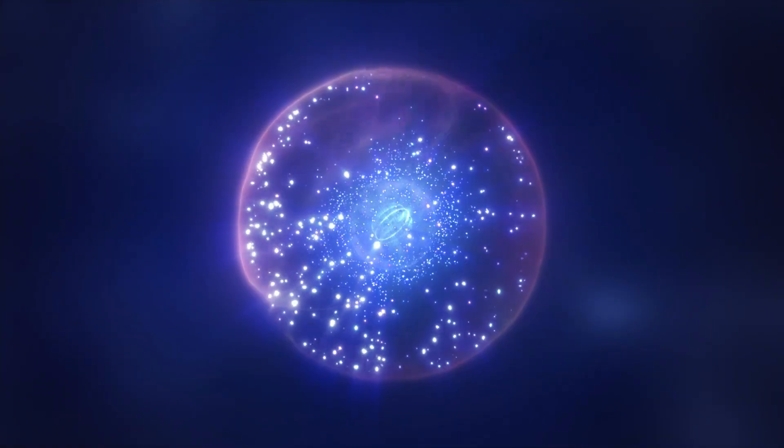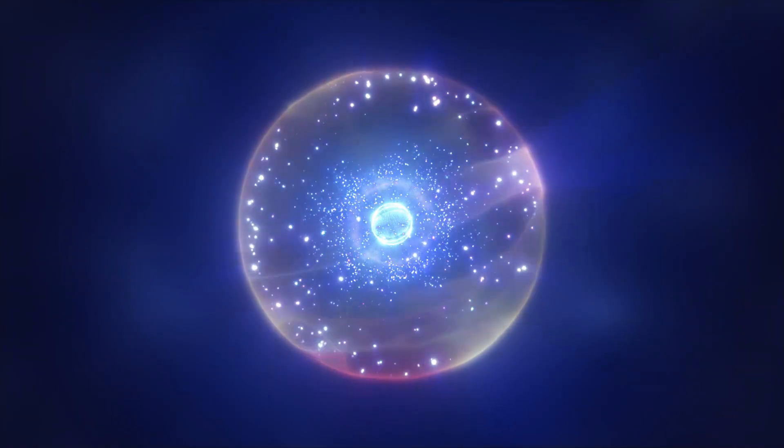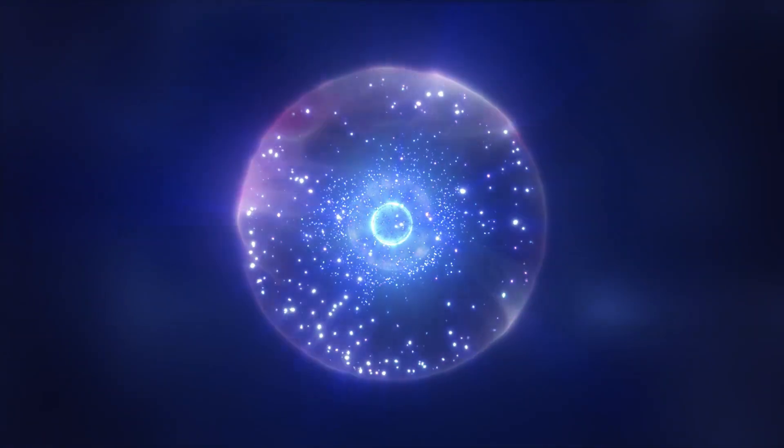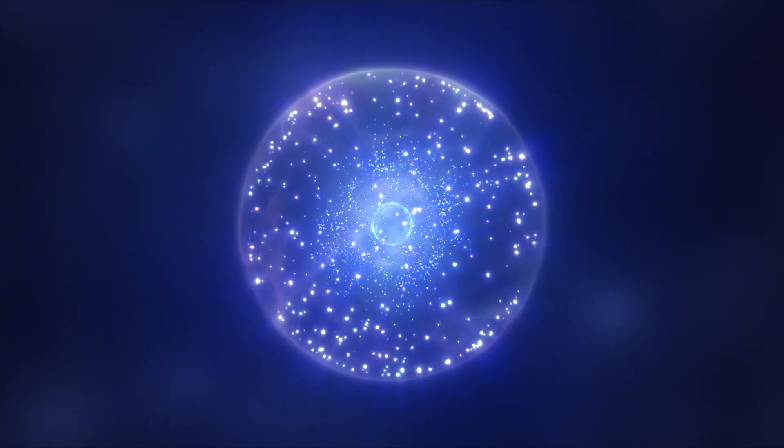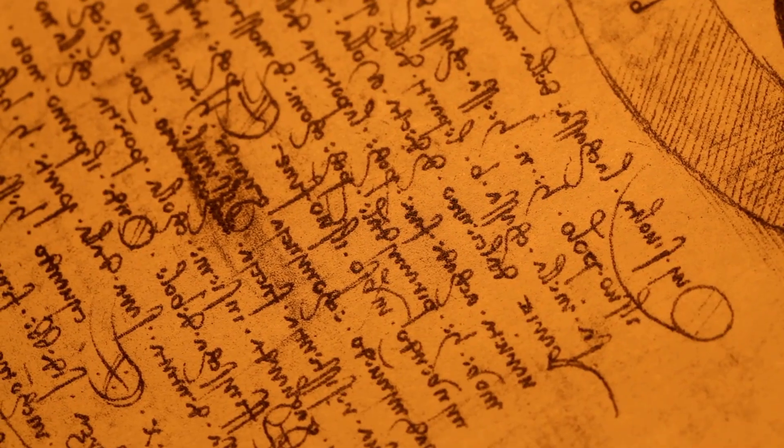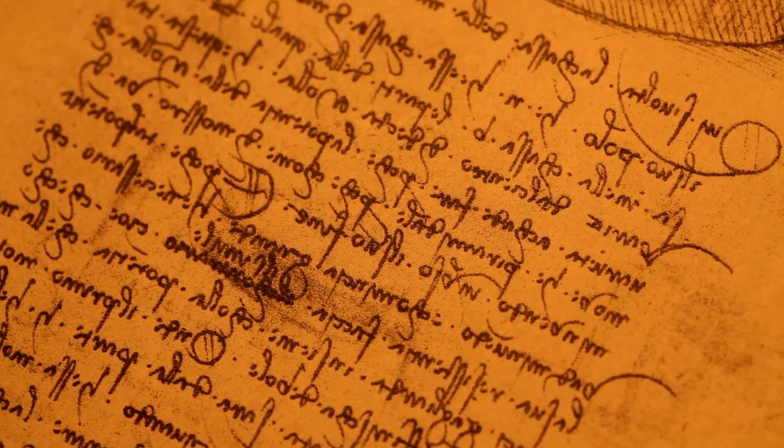He proposed a new model of the atom, often referred to as the plum-pudding model. In this model, the atom was envisioned as a positively charged sphere, embedded with negatively charged electrons, like plums scattered throughout a pudding. This model, though later superseded, was an important step towards our modern understanding of the atom.